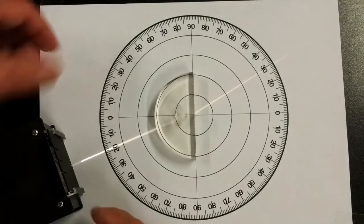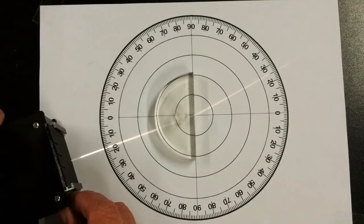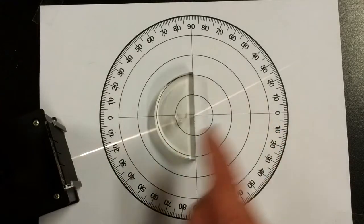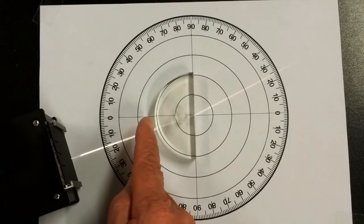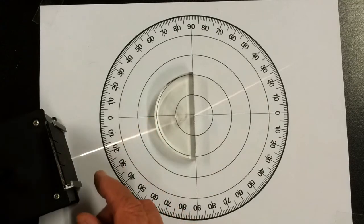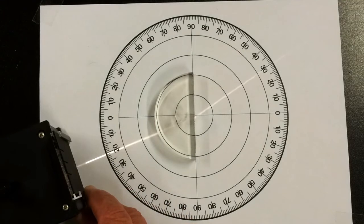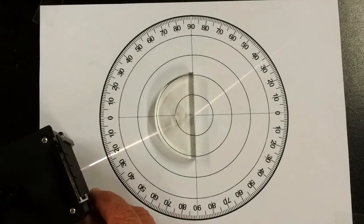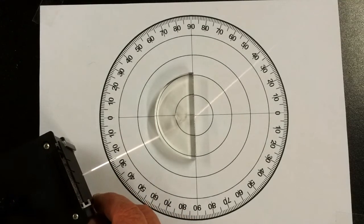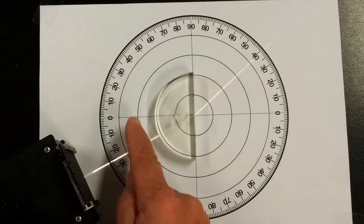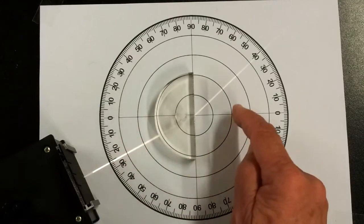What I want to look at is what happens to the angle of refraction as I increase the angle of incidence. As you can see, as I move this around still aiming to head that ray towards the center, the angle of refraction is getting larger as it gets larger.